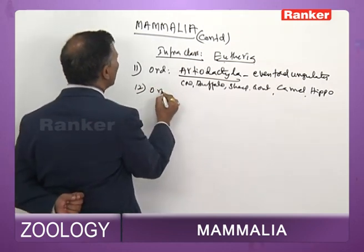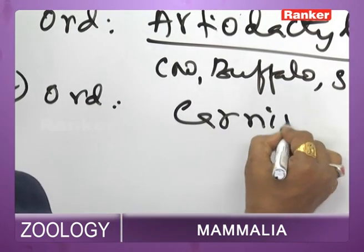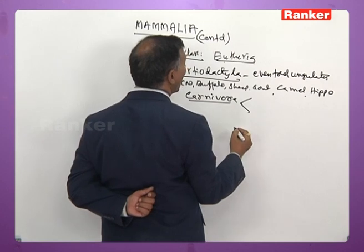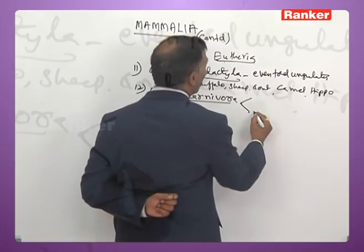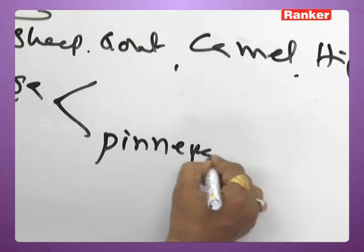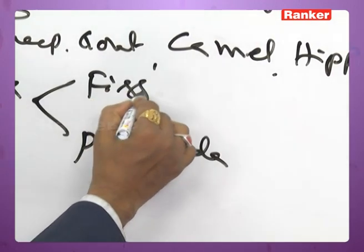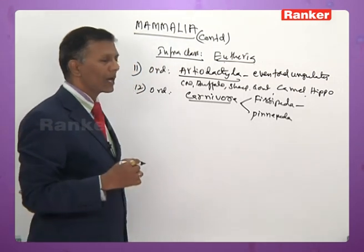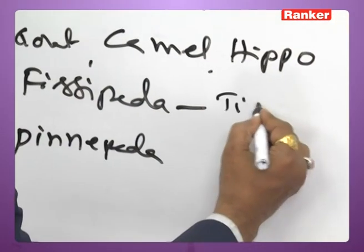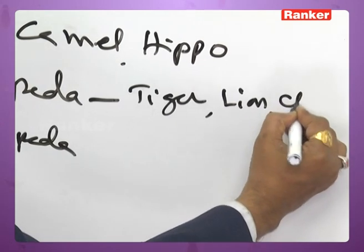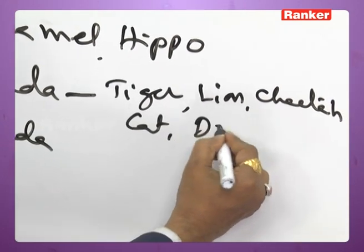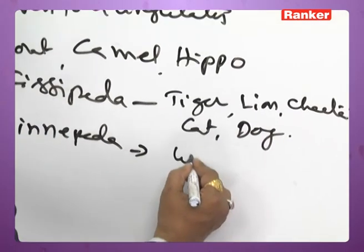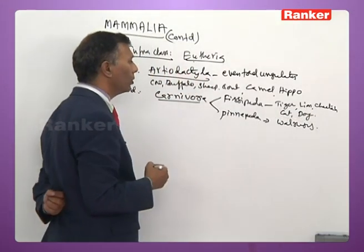Order Carnivora — includes aquatic carnivores placed under Pinnipedia, and terrestrial carnivores placed under Fissipedia. Fissipedia includes tiger, lion, cheetah, cats, and dogs. Pinnipedia includes aquatic carnivores like walruses.